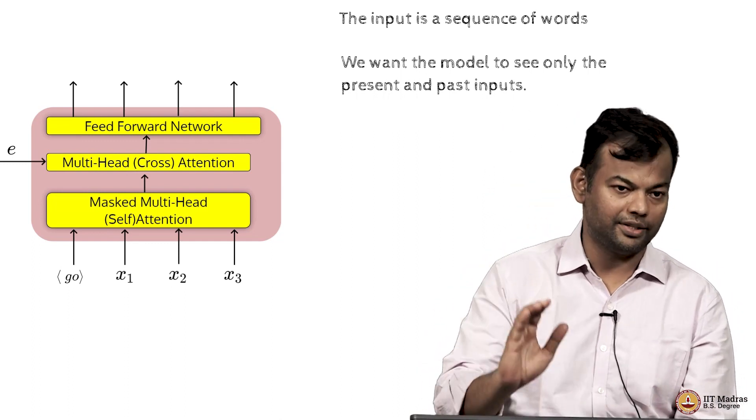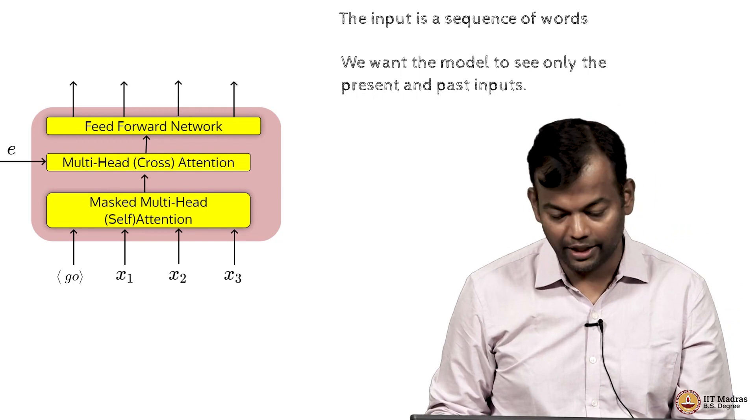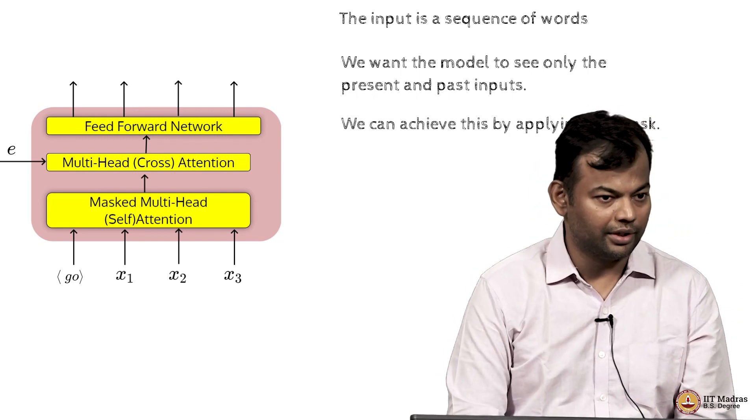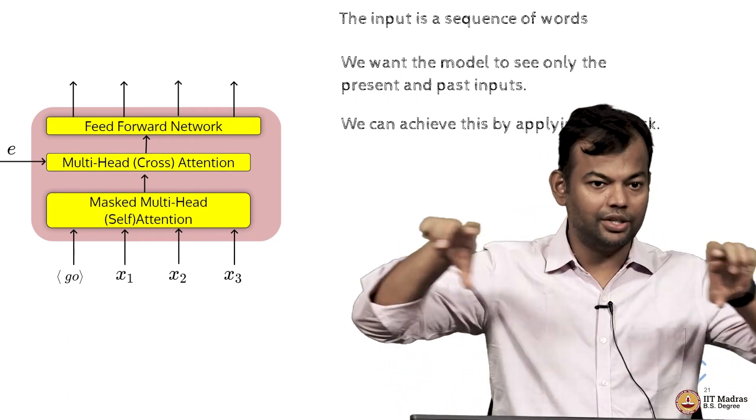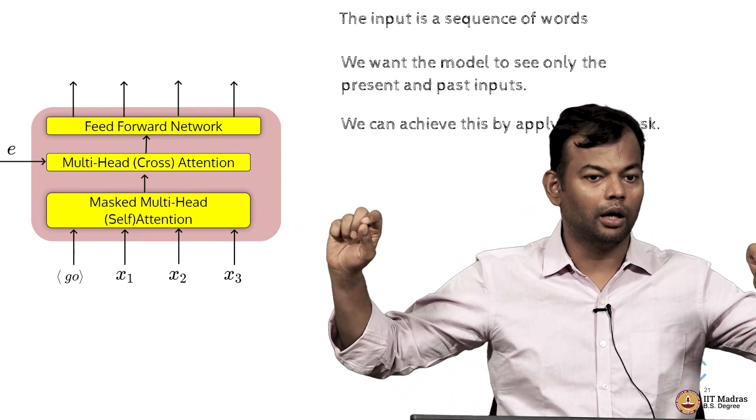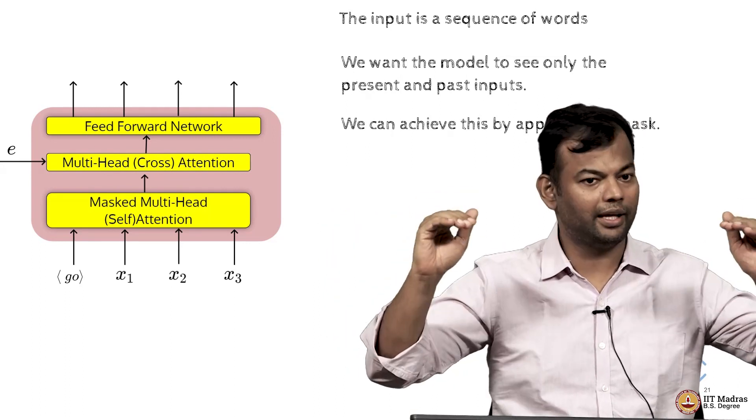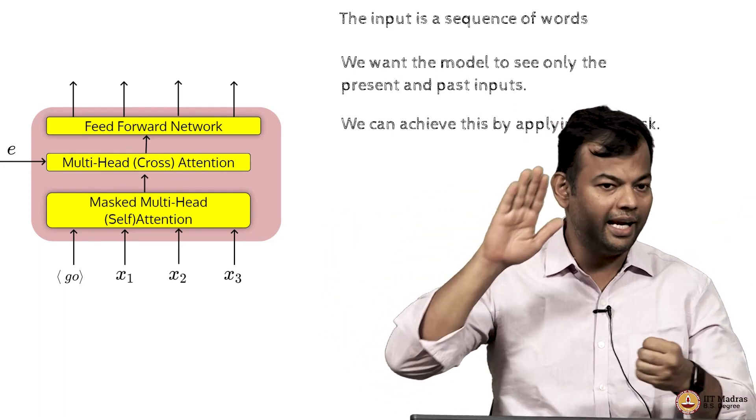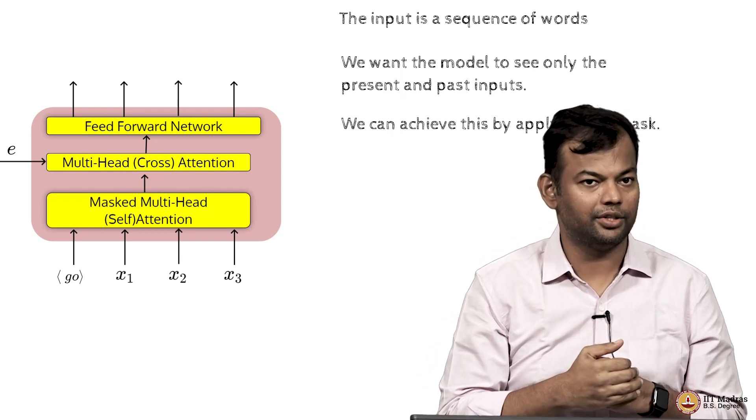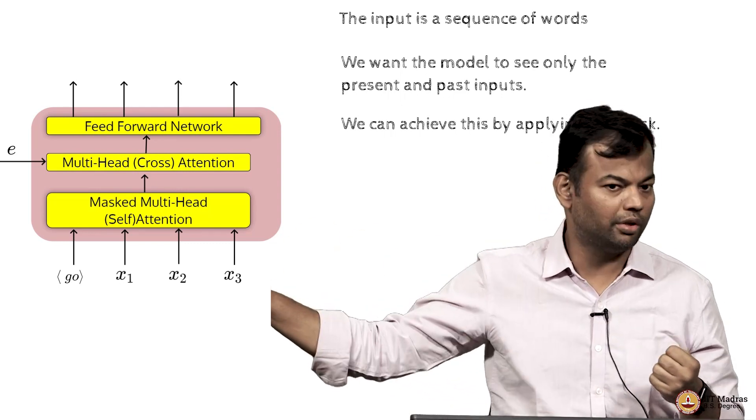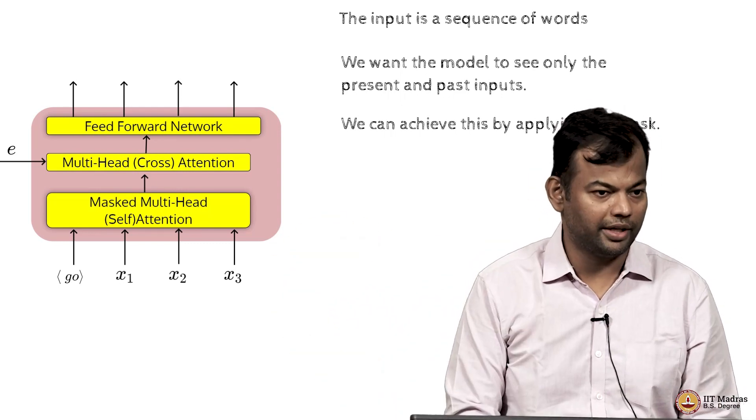So we can only look at present and past inputs and not the future inputs and we already know how to deal with this. We can achieve this by applying the mask. So when we are computing the attention over the remaining elements we just do everything as normal business. By the end when we are trying to calculate the attention weights, when we have calculated the attention weights, we just apply a mask and zero out the weights for all the future words.